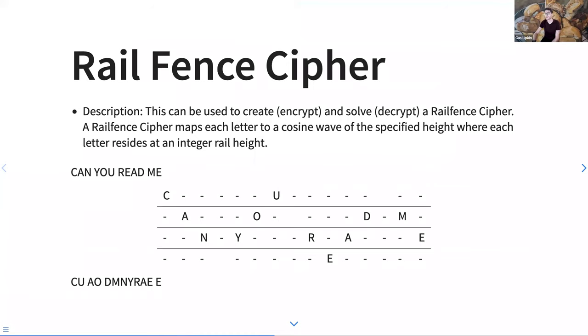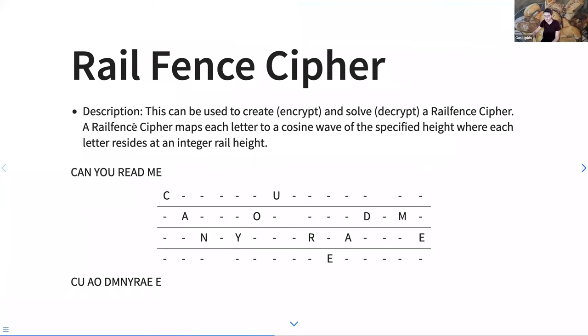Rail fence ciphers — I think you're all going to have a lot of fun with this one because my implementation is a mess. These are pretty neat where you essentially map a character string to a wave-like pattern.